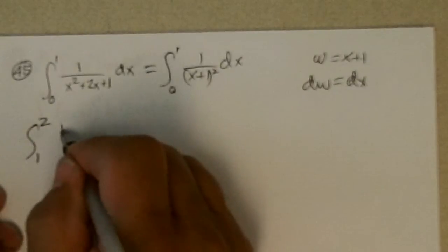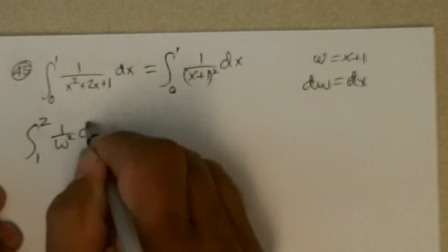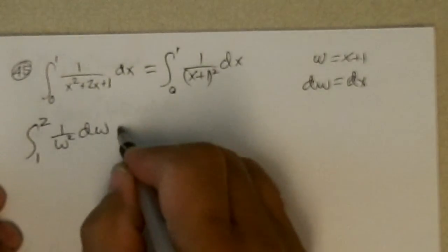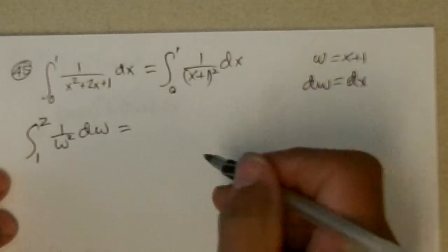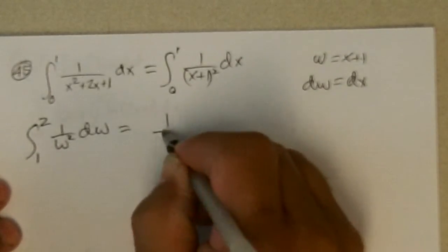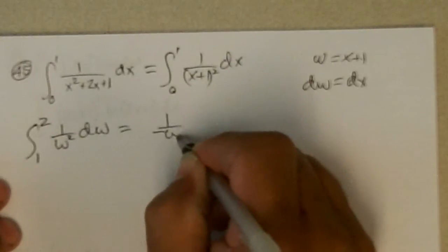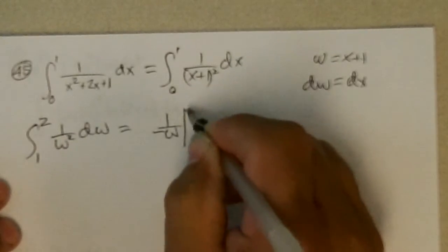1 to 2 of 1 over w squared, dw. That's w to the negative 2, so if I add 1, I get 1 over negative w, evaluated from 1 to 2.